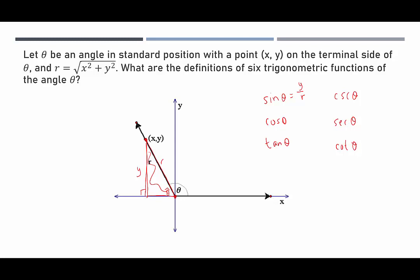Cosine is adjacent to theta-hat, which is the x value, so cosine is x over r. Tangent, which is opposite over adjacent, is y over x. For the reciprocals: cosecant is r over y, secant is r over x, and cotangent is x over y.